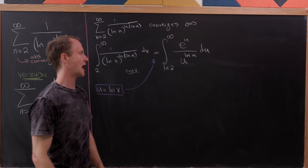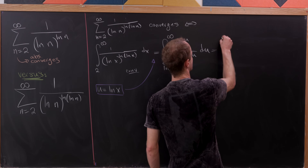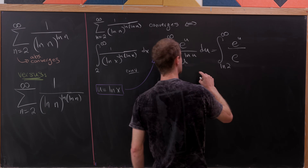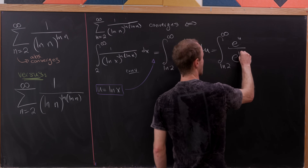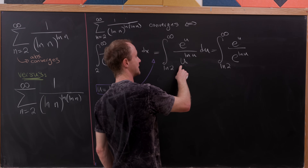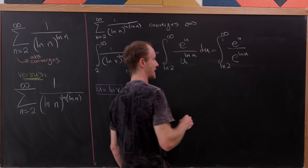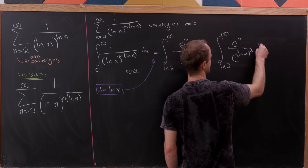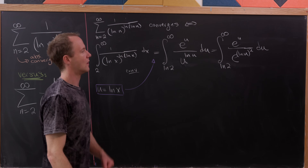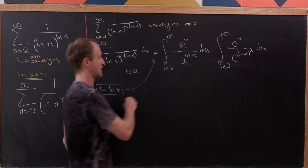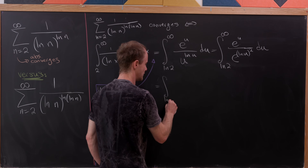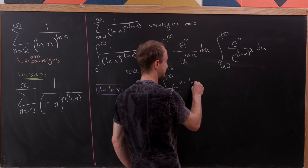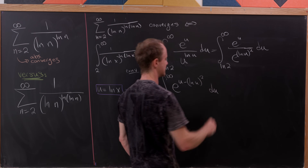Now I'm going to rewrite the denominator a little bit. We have the integral from log(2) to infinity of e^u over e^(log u · log u) du, since u = e^(log u), so u^(log u) = e^((log u)^2). By exponent rules that gives e^((log u)^2), so the whole integrand becomes e^(u − (log u)^2) du.